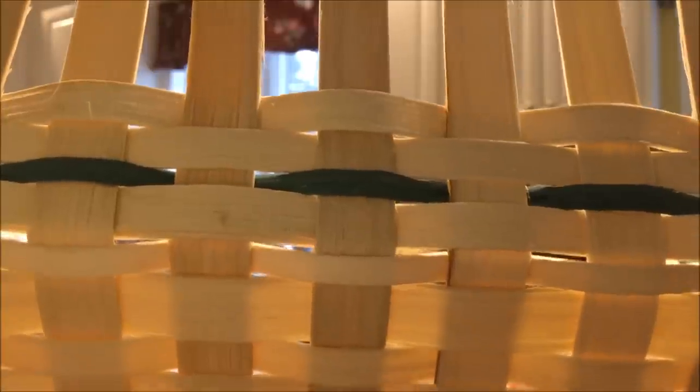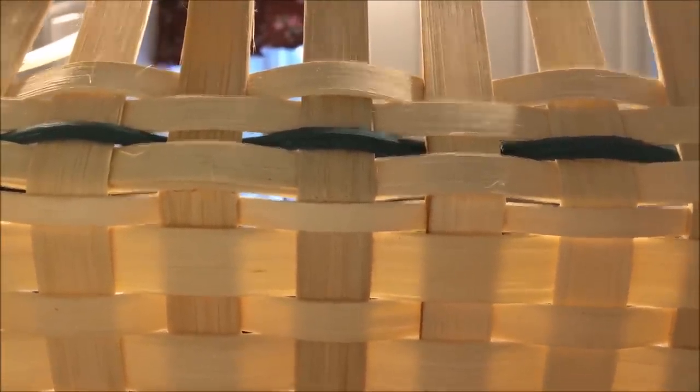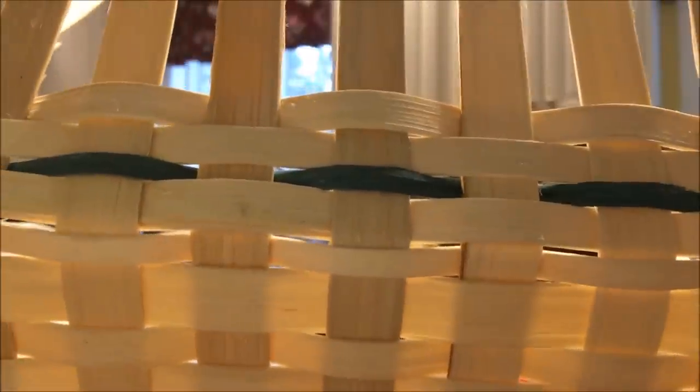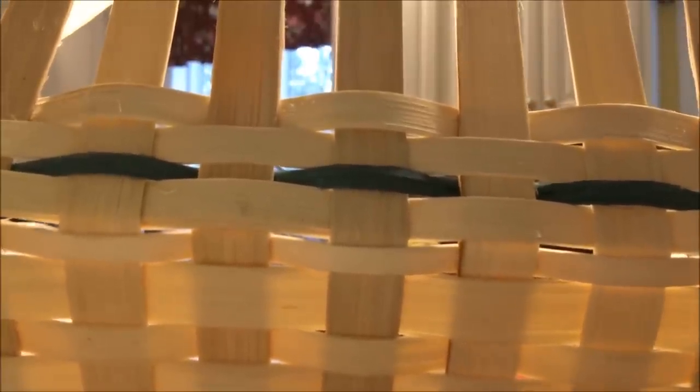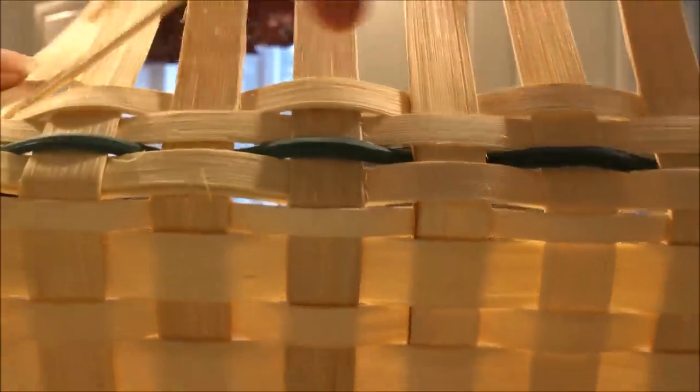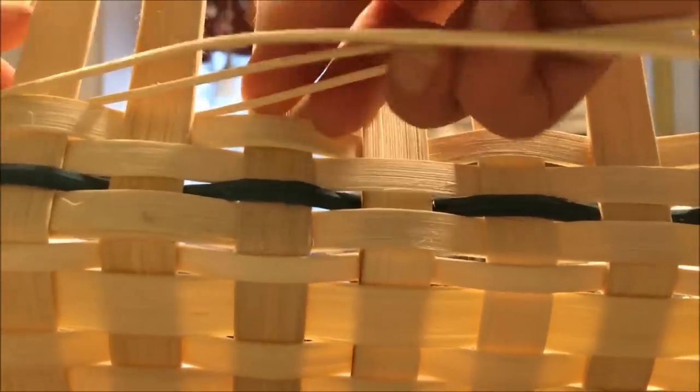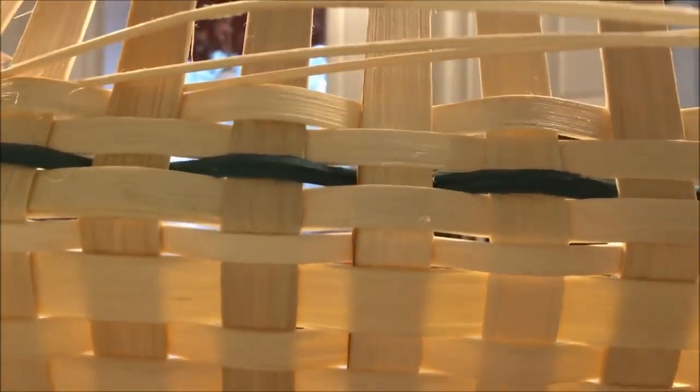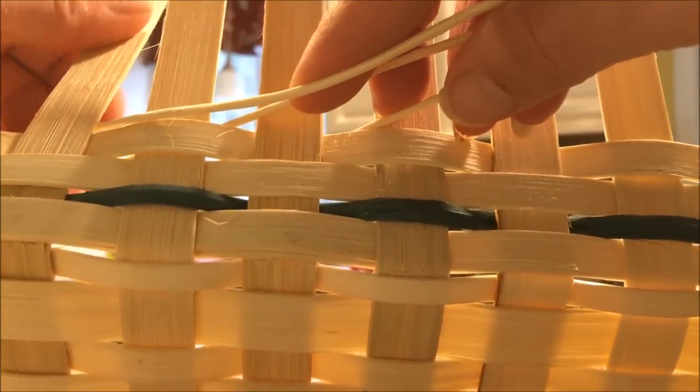This is very simple. The first row is basically three rod whale. First you start with three separate pieces of round reed - I'm using number three round. I try to make sure the pieces are big enough to go around the basket twice, once for the three rod and then the second row to make the arrow. You insert your three pieces behind three separate stakes.